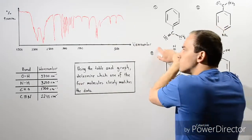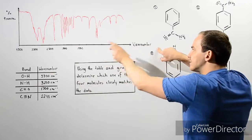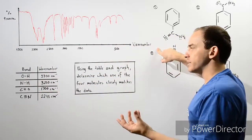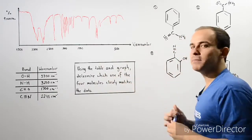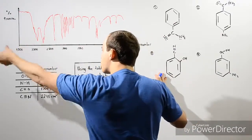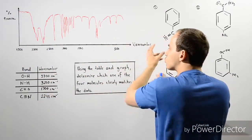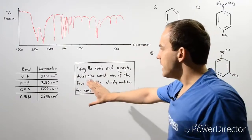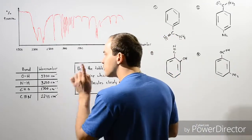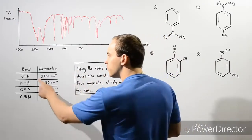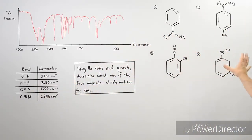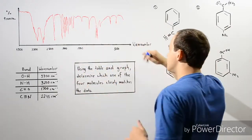Moving to the left along the x-axis, as the wave number increases, the frequency increases and the energy of that oscillating chemical bond increases. So the bonds located to the left are the stronger bonds and the bonds to the right are the weaker bonds. We have a given table that provides the specific wave number values for each of these chemical bonds, and we want to use that to determine which molecule corresponds to this graph.